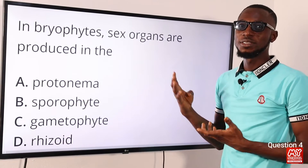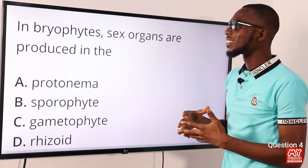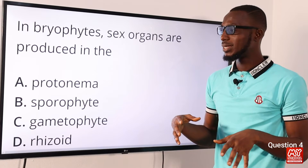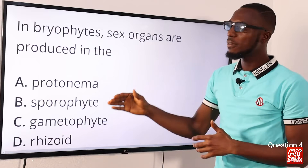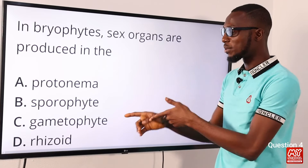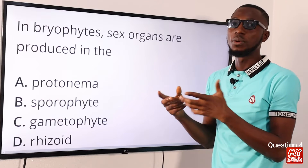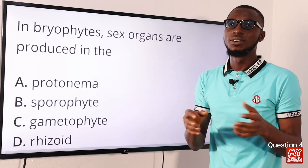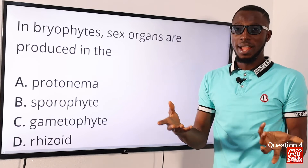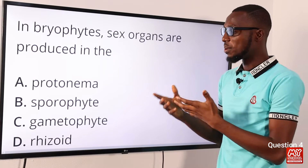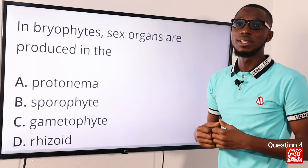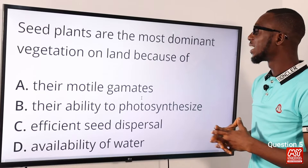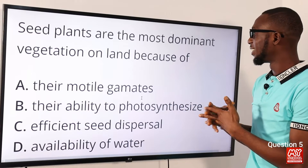Question four: in bryophytes, sex organs are produced where? Bryophytes include liverworts and mosses. The sporophyte is always dependent and attached to the gametophyte. It is in the gametophyte where the motile male gametes — sperm — and the non-motile female gametes — the egg — are produced. So the correct option is option C for the gametophyte.